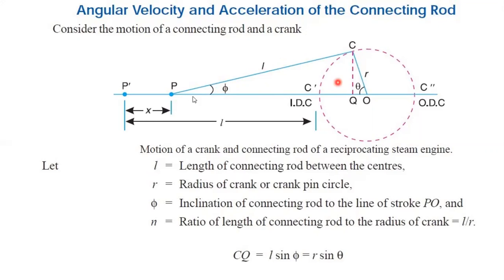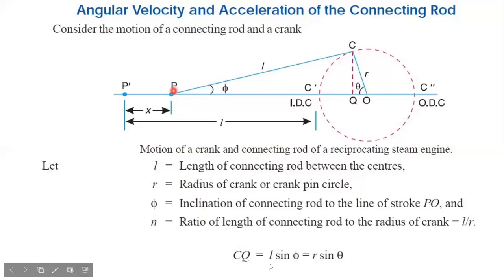I am going to resolve the connecting rod component l into horizontal and vertical components. Horizontal means we will be having l cos phi, and vertical means l sin phi. Similarly, I am going to resolve the crank radius into horizontal and vertical components. Horizontal we will be having r cos theta, and vertically we will be having r sin theta. CQ is the vertical component, so we will be having r sin theta, and the vertical component of the connecting rod is l sin phi.